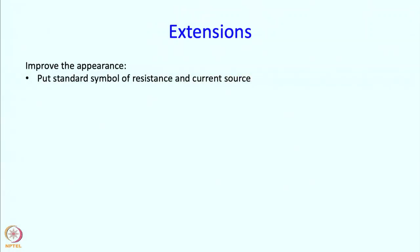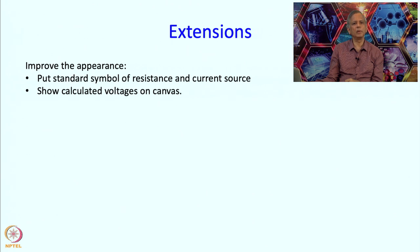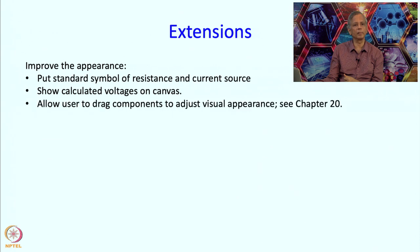There are some obvious things that could be done. We could improve the appearance — we should really be putting the standard symbols of resistances and current sources. Maybe we should not be using the shell window at all; everything should happen on the canvas. The final values should be shown on the canvas and the user should be asked to type directly on the canvas as well.